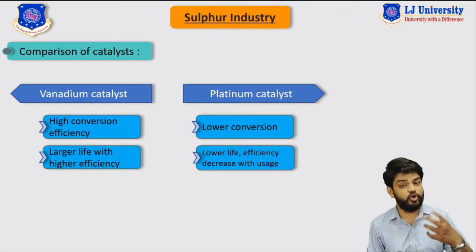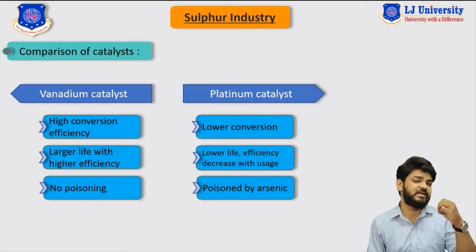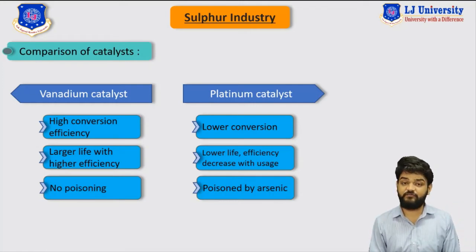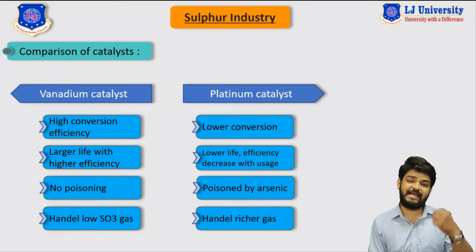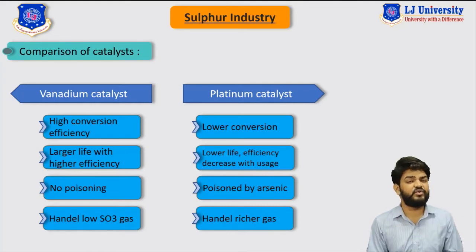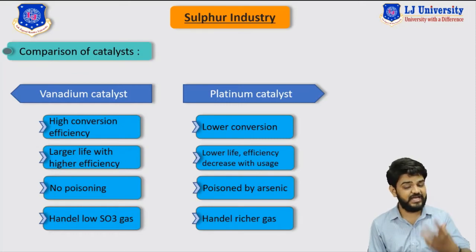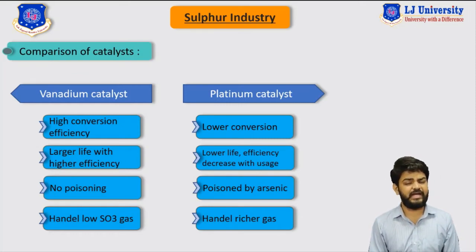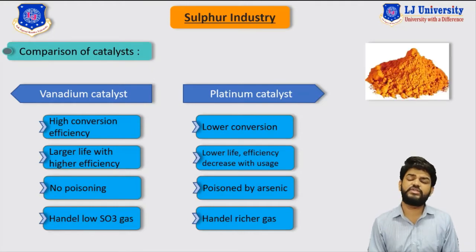Another advantage is that vanadium pentoxide is poison-free, while platinum catalyst is poisoned by arsenic present in the gases. Vanadium pentoxide can also handle low concentrations of SO2 gas, but with platinum we require higher concentration — a rich SO2 gas is required. Furthermore, platinum is very expensive while vanadium pentoxide is relatively cheap.